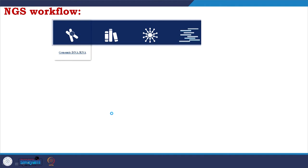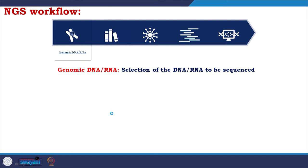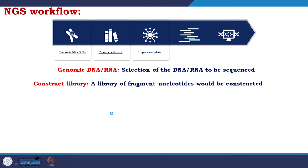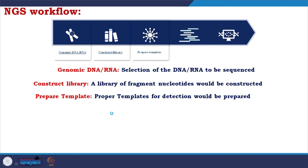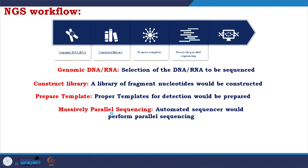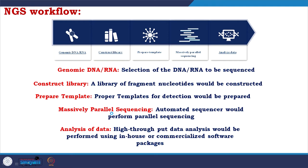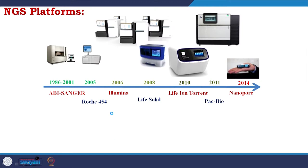These are the basic characteristics of NGS. The workflow involves: first, developing a genomic library of DNA or RNA by selecting the target; then constructing a library of nucleotide fragments; then preparing a proper template for detection, since you break the genome into several fragments which must be reassembled after sequencing; then massively parallel sequencing with an automated sequencer; and finally, high-throughput data analysis using either in-house or commercial software packages.